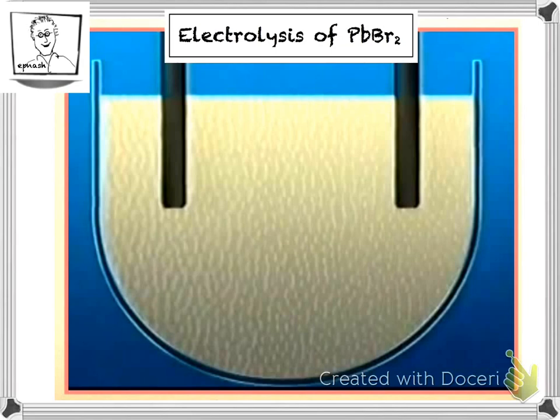Electrolysis is used in industry to isolate and collect a number of elements, including chlorine, which is collected sometimes by the electrolysis of sodium chloride.